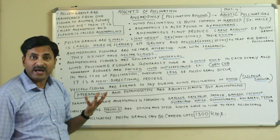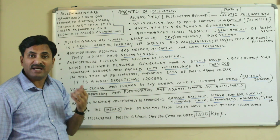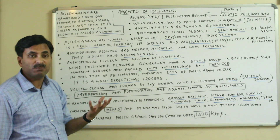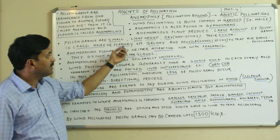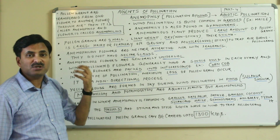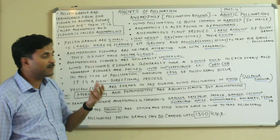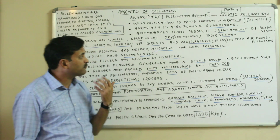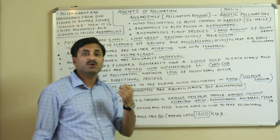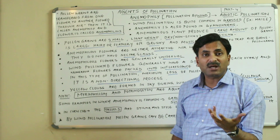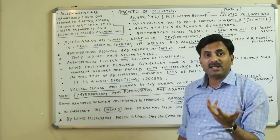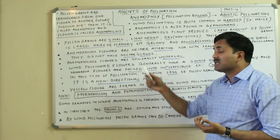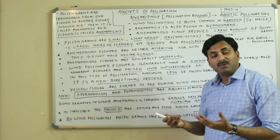Anemophilous flowers are not attractive because the agency for pollination is air, not insects. Therefore, the flowers are small, not colorful, and have neither attractive appearance nor fragrance. They also lack nectar glands because insects do not visit them to suck nectar.